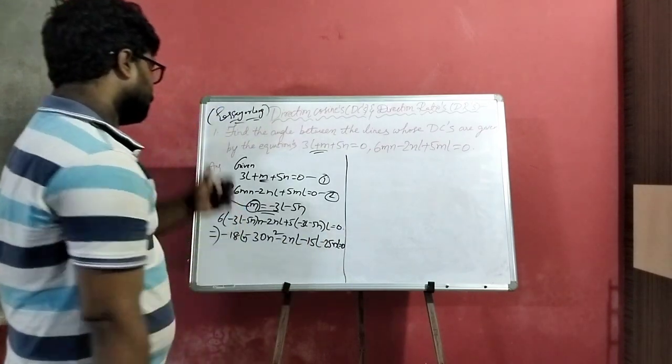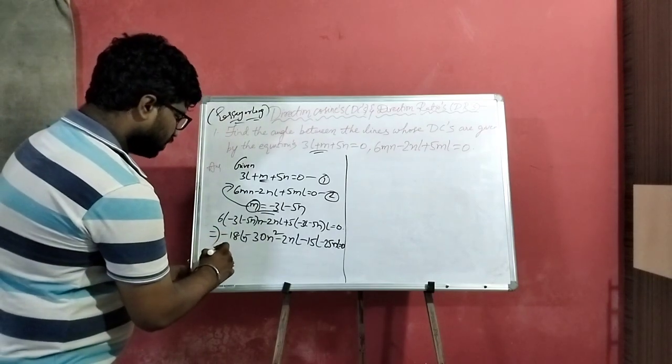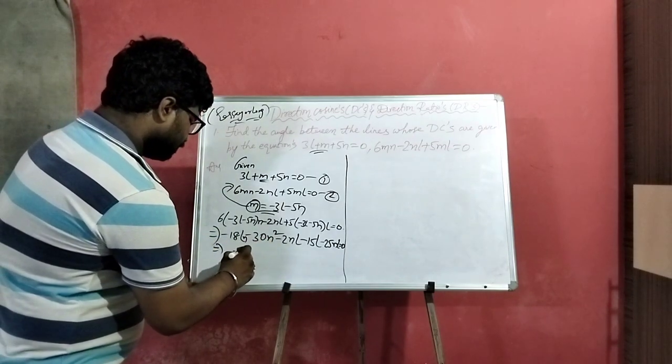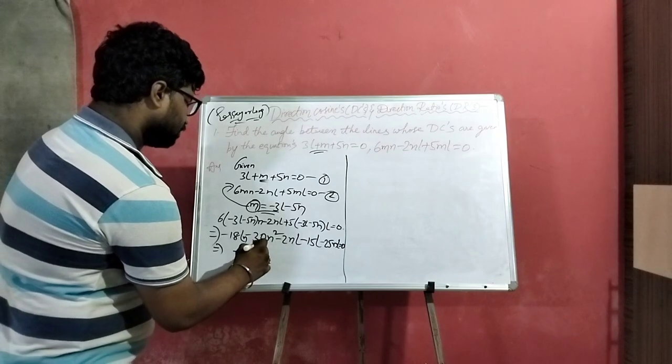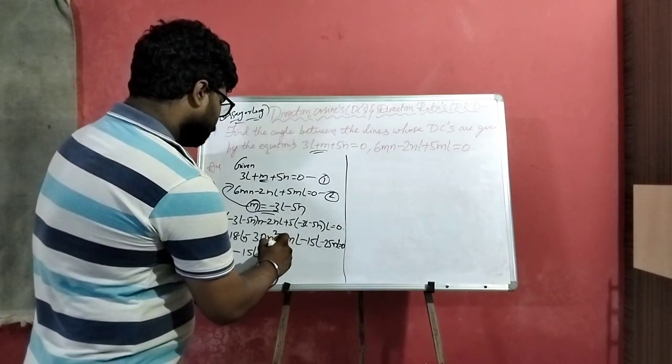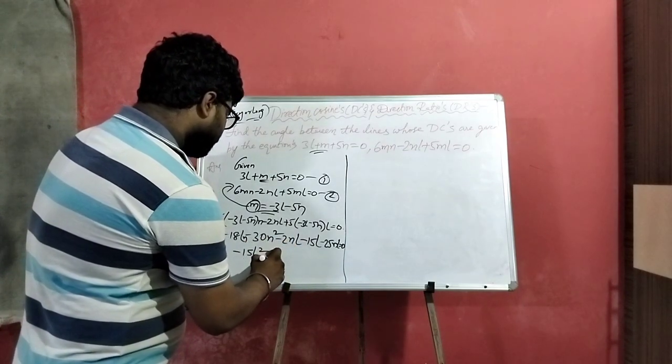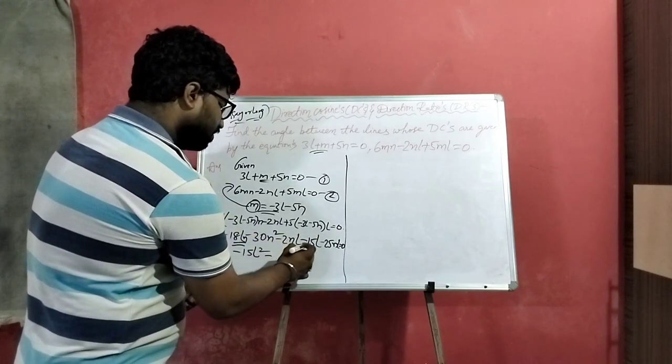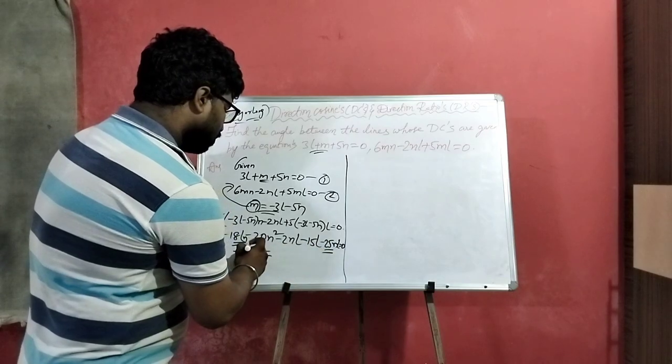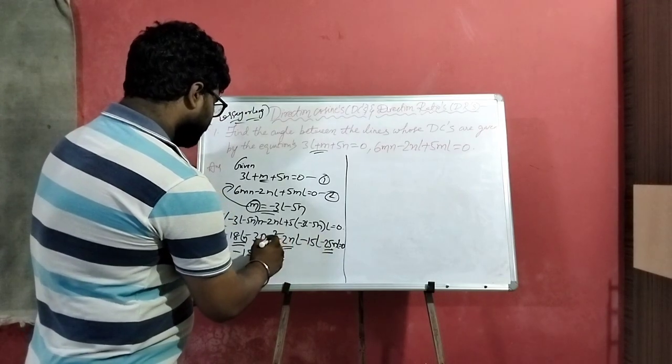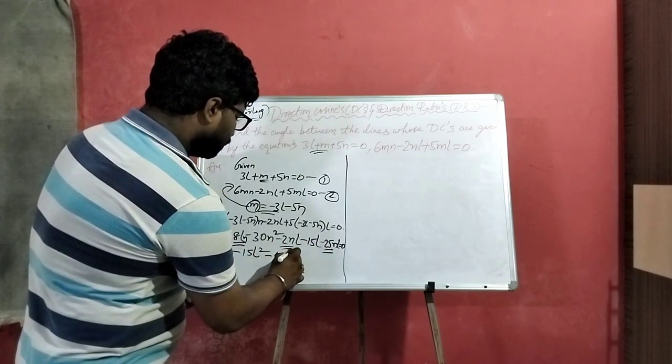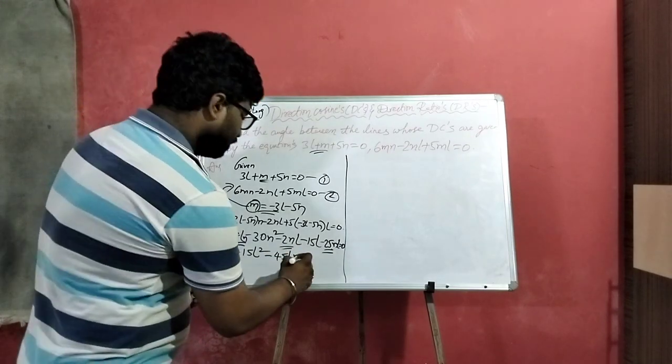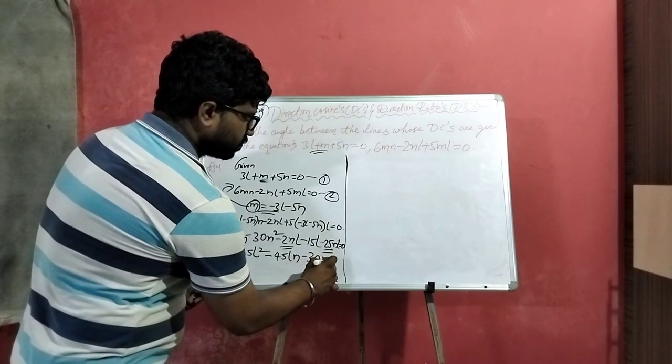minus 15NL squared. The equation is minus 15NL squared, so 18 and 25NL common and 2L,